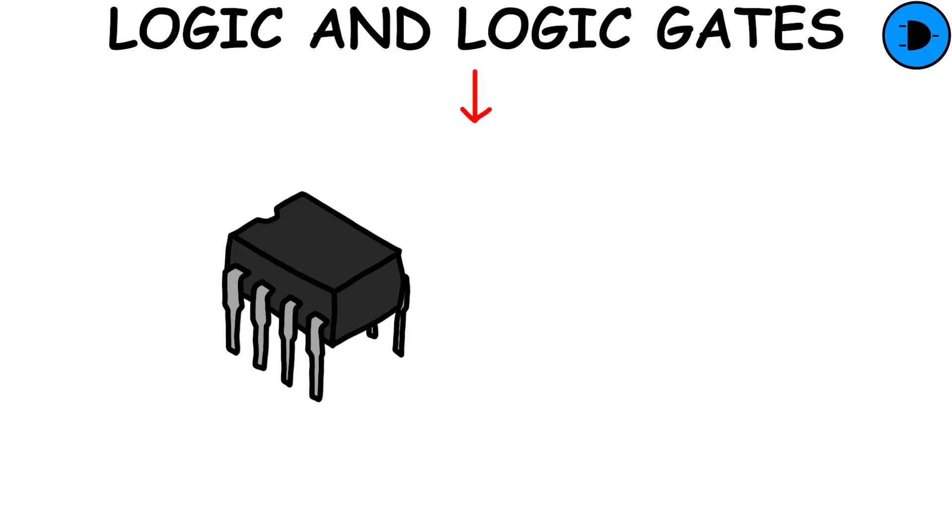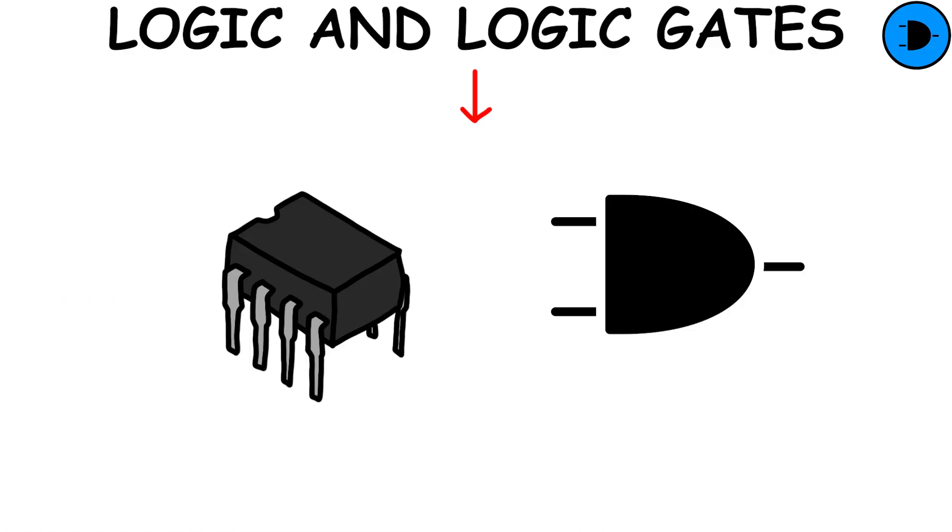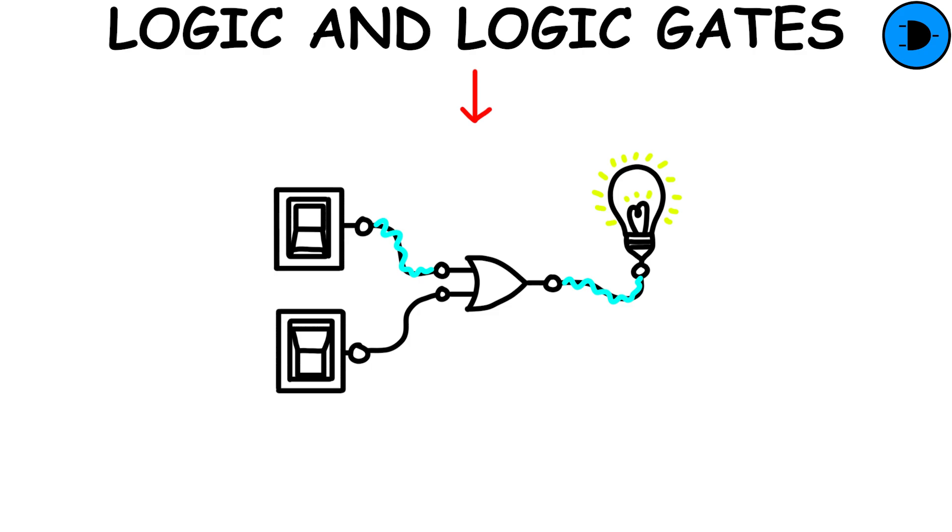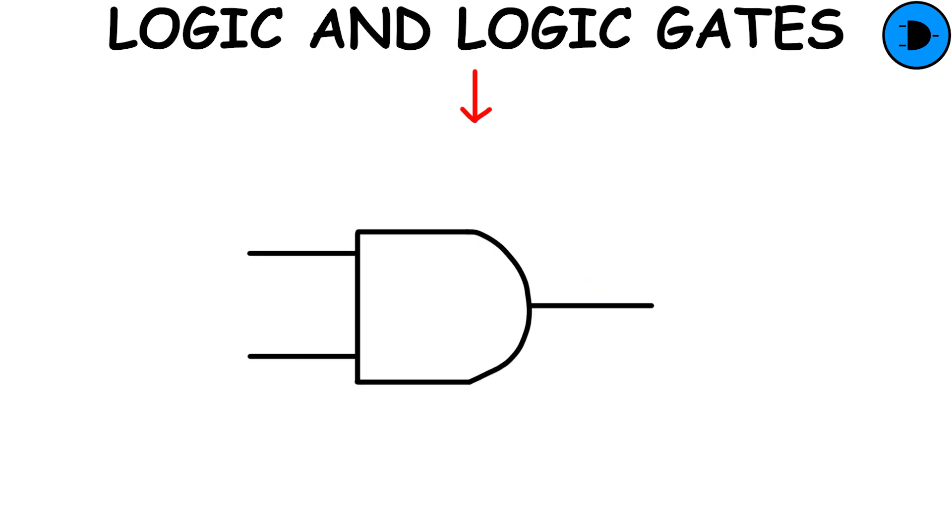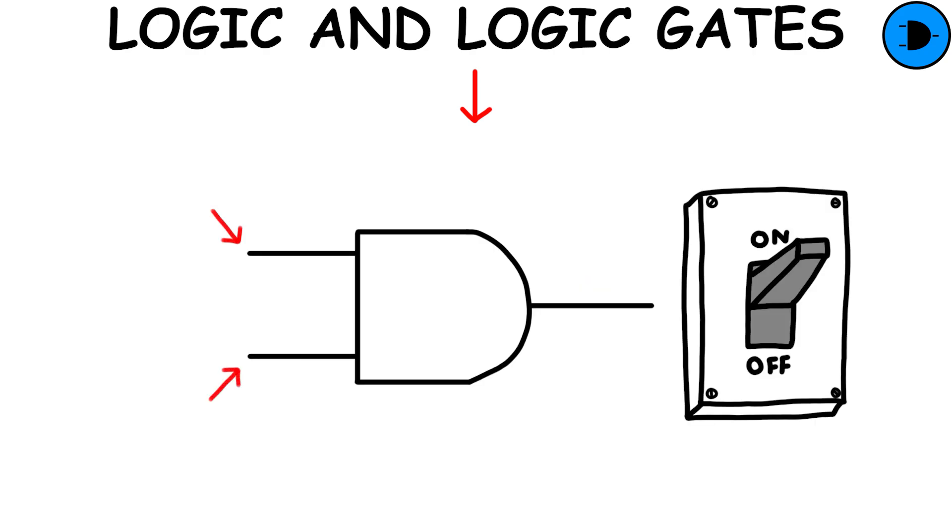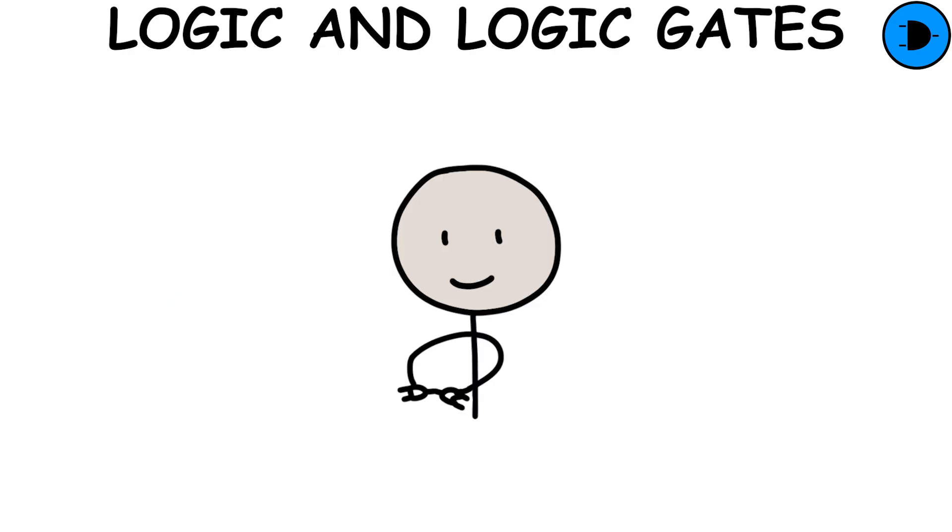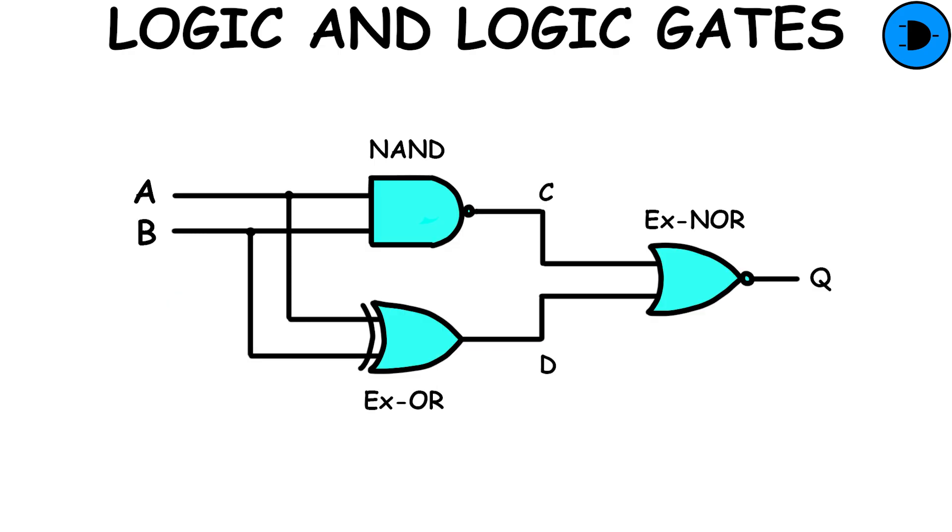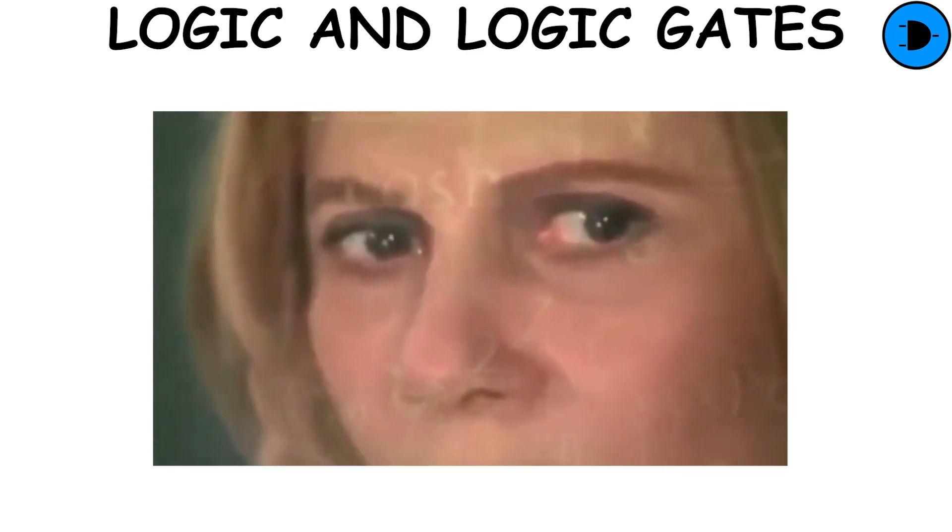Using transistors, you can create logic gates, which are electronic circuits that represent logical statements. For example, an AND gate turns on only if both inputs are active. By intelligently combining these gates, you can build circuits that perform calculations according to Boolean algebra, formalizing mathematical operations in binary.